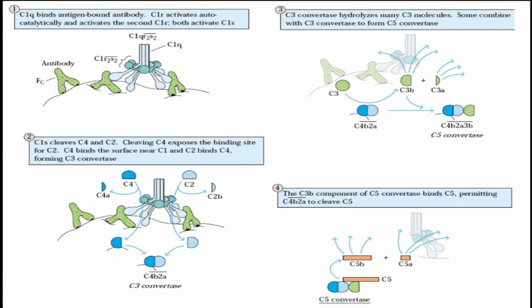C1Q binds to the antibody FC region, causing a conformational change in C1R. C1R is activated as a serine protease enzyme. This activated C1R then cleaves C1S, producing one activated C1S enzyme. C1S then has two substrates: C4 and C2.